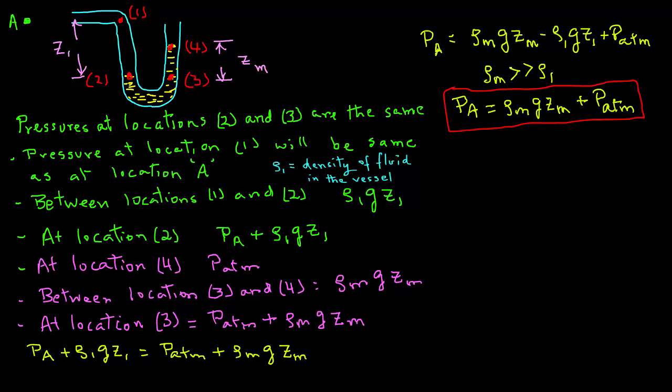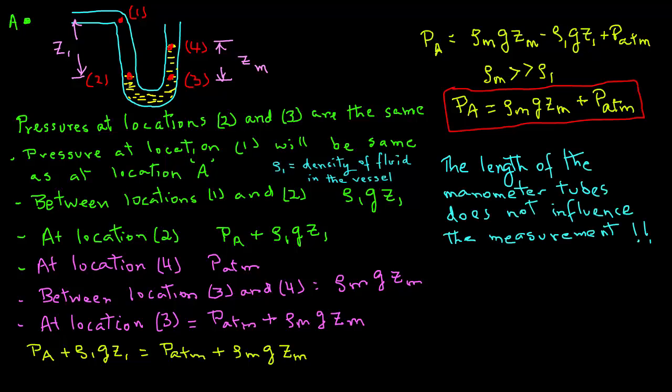If we know the density of the manometer fluid ρm, the displacement of the manometer fluid in the U-tube Zm, and the atmospheric pressure, we can determine the pressure at location A, Pa. Note that in a manometer, the length of manometer arms has no influence on the measurements. Only the displacement of the manometer fluid is used in determining the pressure.